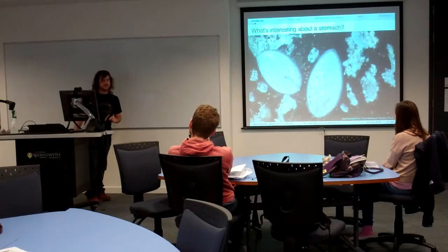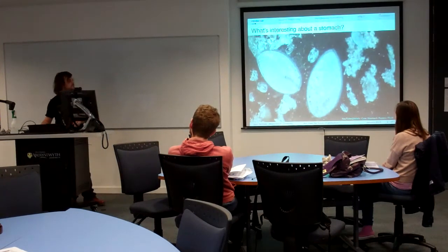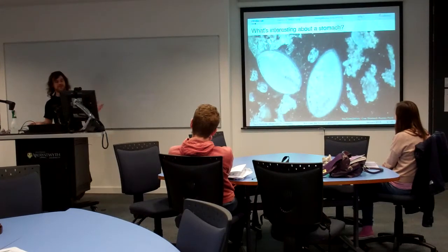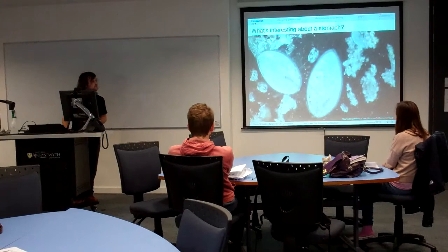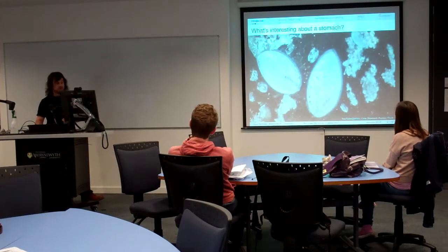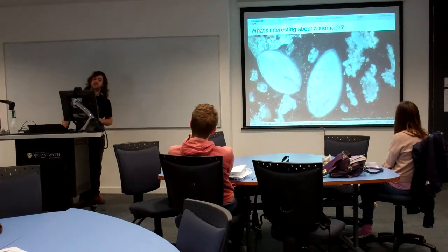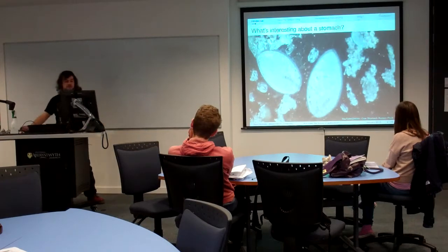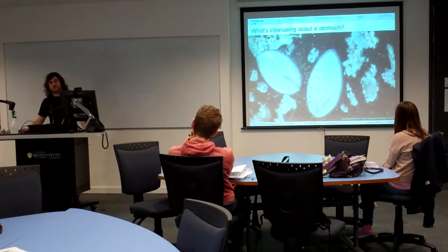Those bacteria are under constant competition for access to the resources that the cow has swallowed, and under such competition they'll release antimicrobials that will kill off other bacteria. This is useful for us because that's the sort of thing we like to do with antibiotics in our own bodies to fend off bacterial infection. So if we could extract those, put them into our antibiotics and save the world, that would be great — but unfortunately it's not that easy because we're not even sure what all the species of bacteria in the rumen actually are.